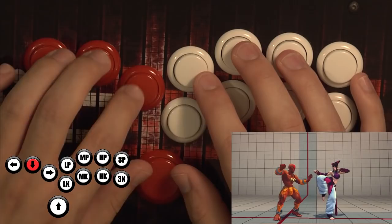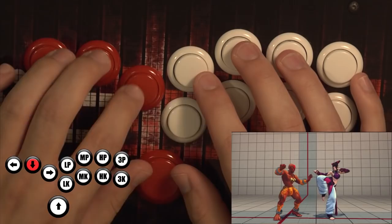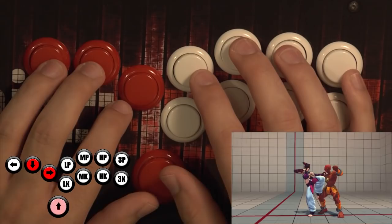Moving right along to Dhalsim and Tiger Kneeing a Dragon Punch motion. What you do is you perform a dragon punch like normal, then press up and then all three punches to set up the overhead.